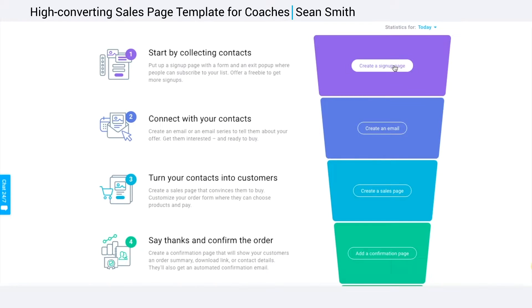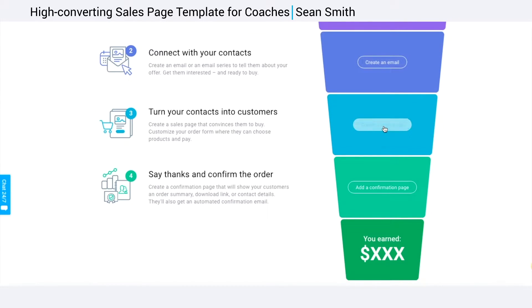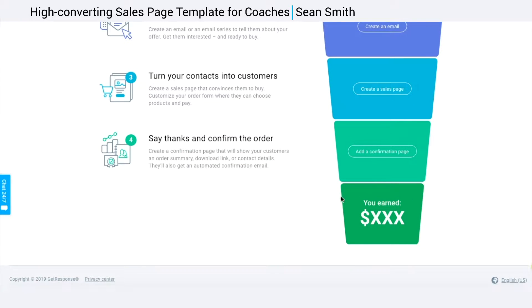The first step is to create an opt-in page to capture the leads. Second step is to create an email that goes out to the leads once they join your list. Third step is to create a sales page, and your fourth step is a thank you page after people buy the product. And then it will capture all the conversion percentages and show you how much money you've made.